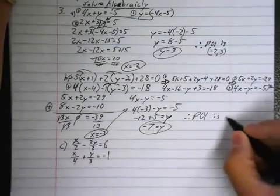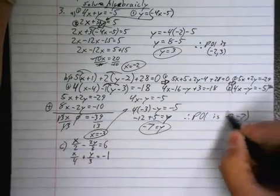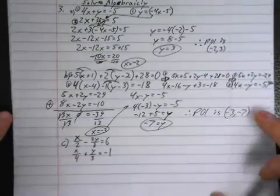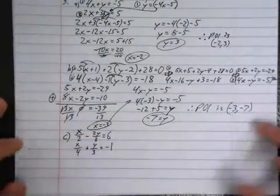Therefore, POI is negative 3, negative 7. Whew! Okay. 5 minutes. Let's see if I can finish this in, like, 2.